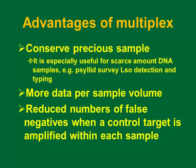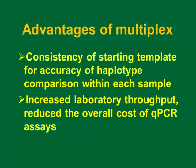The beauty of multiplexing: first, it conserves the precious sample. For example, when we do the psyllid survey, you only have a little amount, and before you do any more research you've run out of DNA. Of course, per reaction volume, you get more data. With the internal control, you reduce the number of false negatives or positives. It's more accurate for haplotype comparison within each sample because you're using the same starting template. Overall, you save money and labor for a better result.